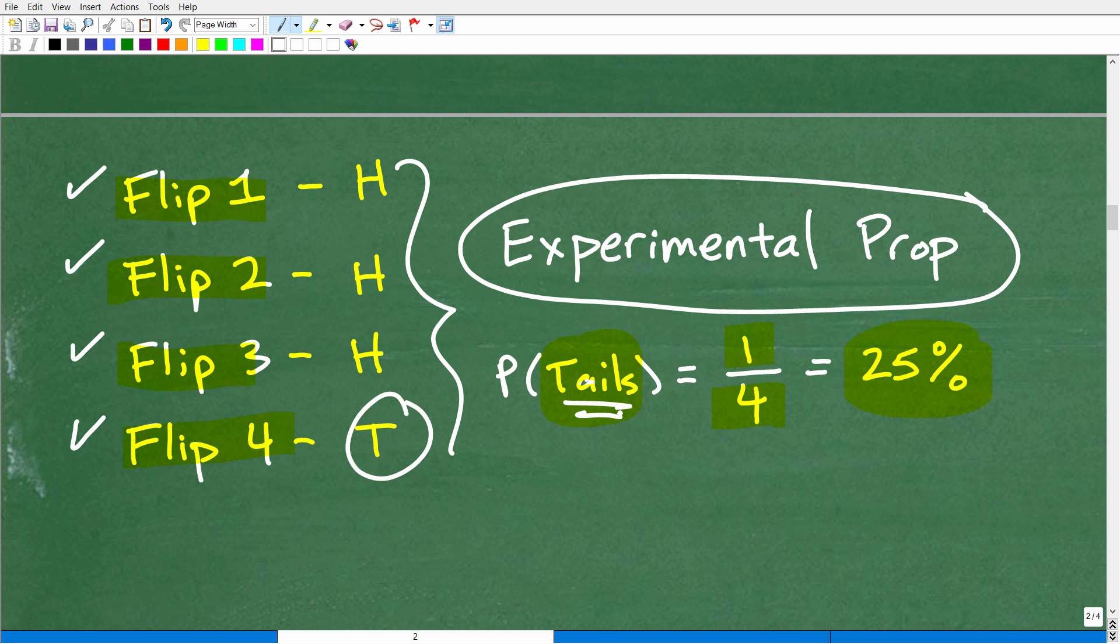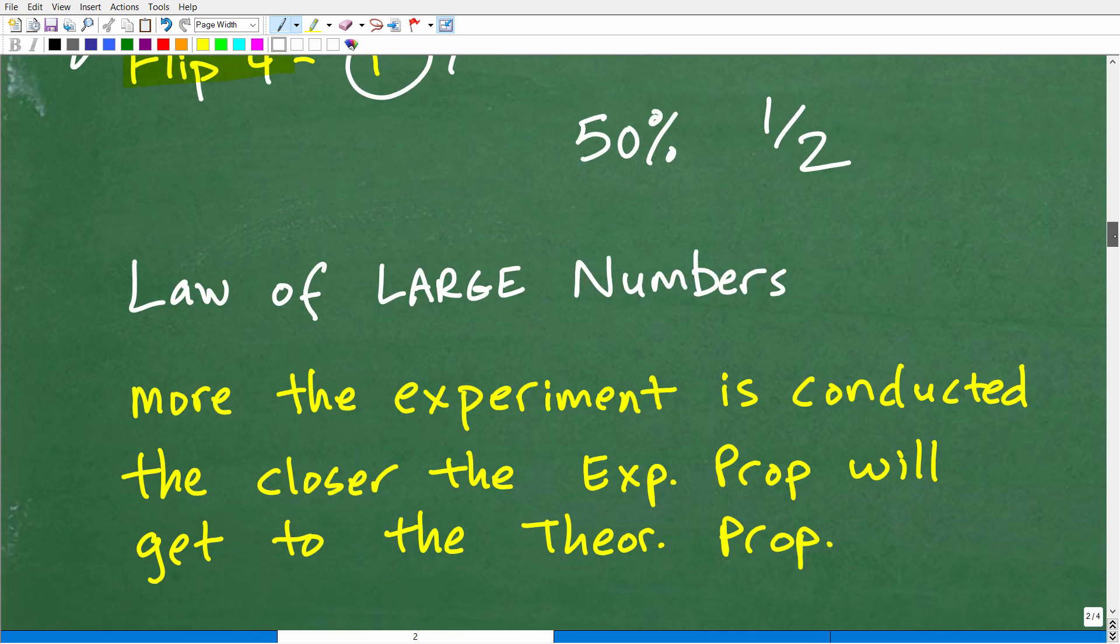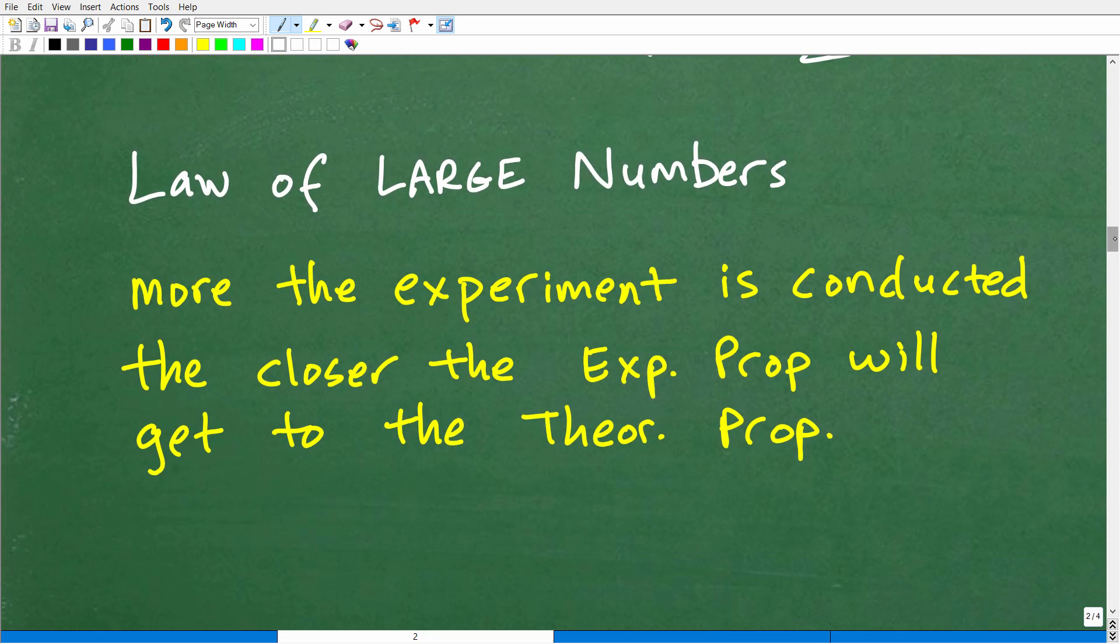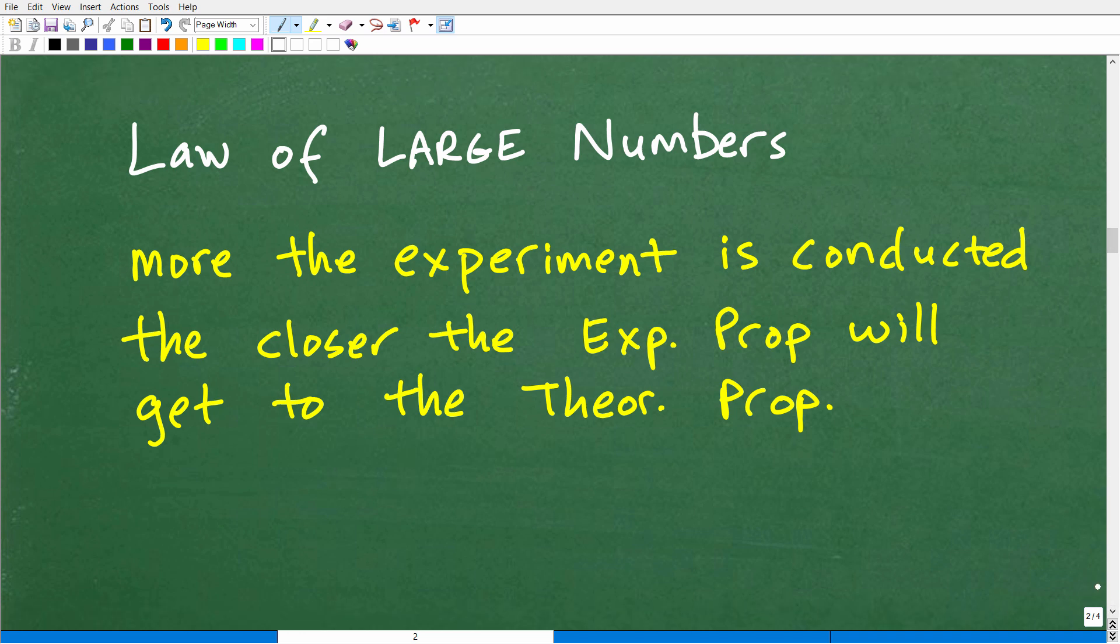Now, from a mathematical standpoint, we expect to get tails 50% of the times or one out of two times. But from an experimental standpoint, you know, with these four trials here, I'm only getting tails 25% of the time. So what is going on, all right? Well, this can be resolved by this concept here. And this is something that's super important in terms of resolving experimental probability and theoretical probability. It's called the law of large numbers.